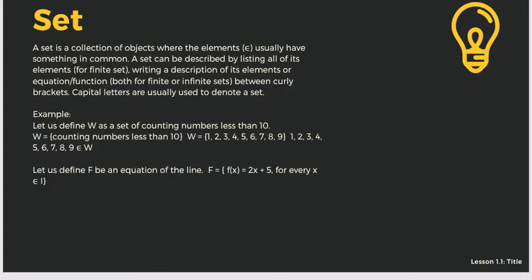For Lesson 1, we have set theory. We need to understand what a set is. A set is a collection of objects where the elements usually have something in common. A set can be described by listing all its elements, or for a finite set, by writing a description of its elements, or by an equal function — both for finite and infinite sets, or what we call countable and uncountable sets. Capital letters in curly brackets are usually used to denote a set.